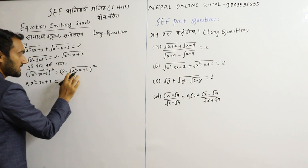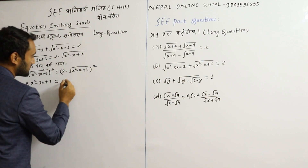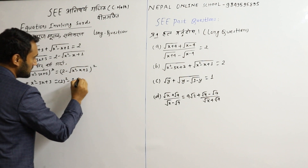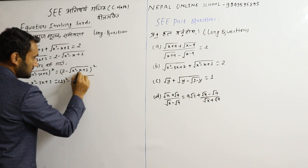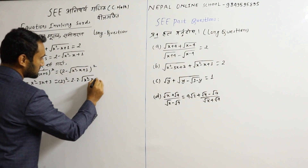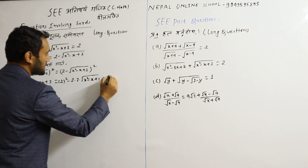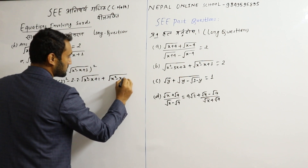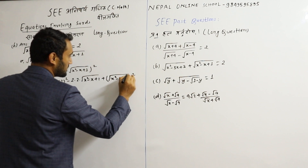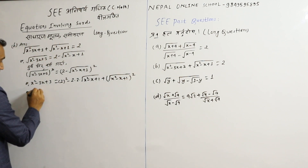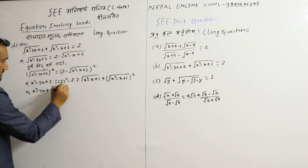This is a minus 2 square minus 2 into 2 into a, this is b minus x² − x + 1. So we square root(x² − x + 1) — whole square. So a gives x² − 3x + 3 equal to 4.